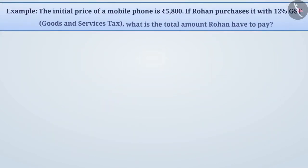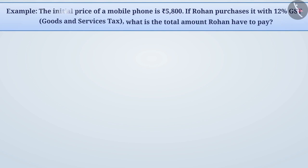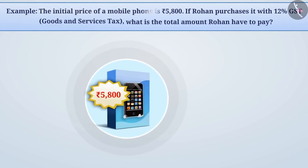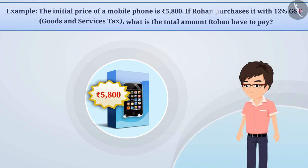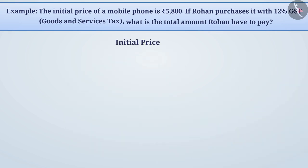Next example. The initial price of a mobile phone is 5,800 rupees. If Rohan purchases it with 12% GST, i.e. goods and services tax, what is the total amount Rohan has to pay? Here, we are given that the initial price of the mobile phone is 5,800 rupees and the rate of GST is 12%. We have to find out the total price that Rohan has to pay.